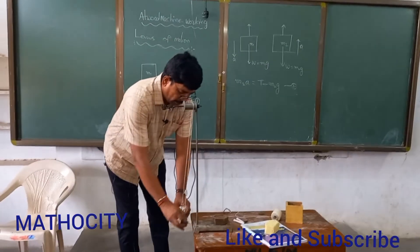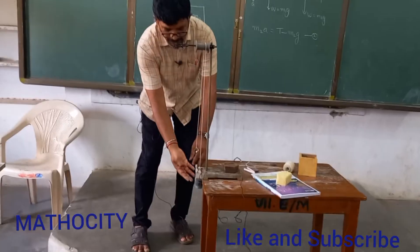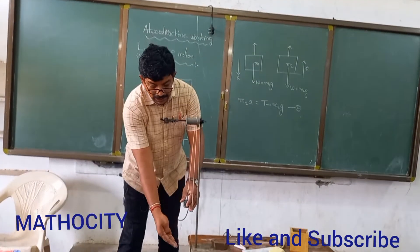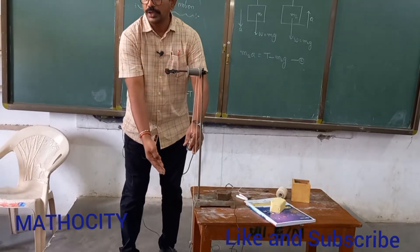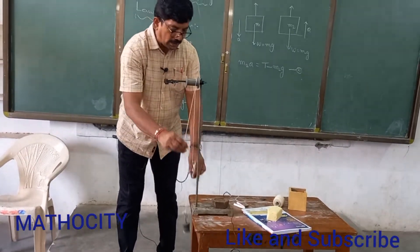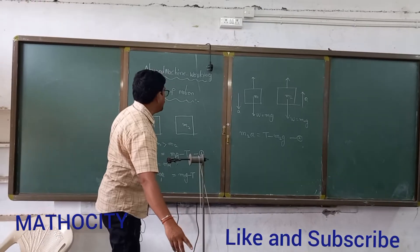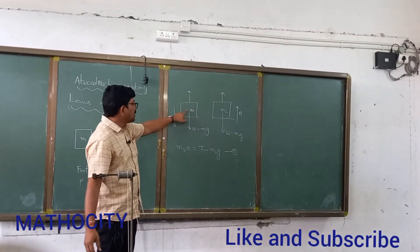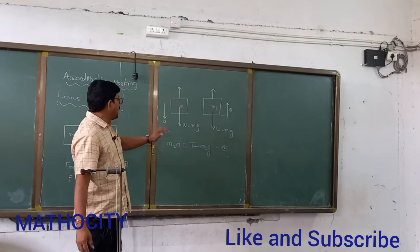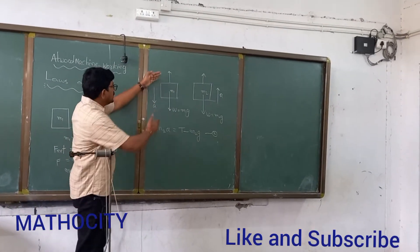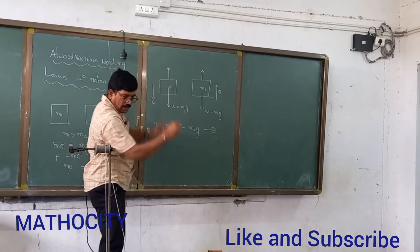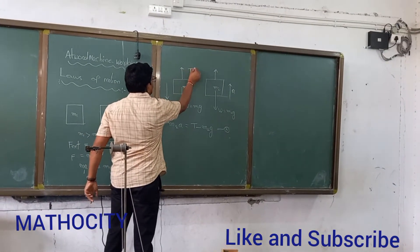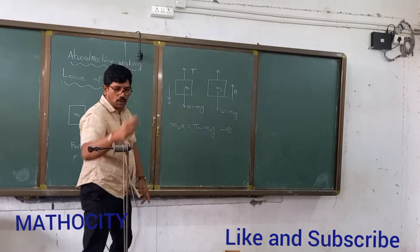M1 is greater than M2 — that is why this load is going down. I have drawn the free body diagram for load M1. The mass of the load is M1. The upward arrow shows the tension acting along the string — tension always acts in the upward direction. T is the tensional force, uniform tensional force, acting in the upward direction.